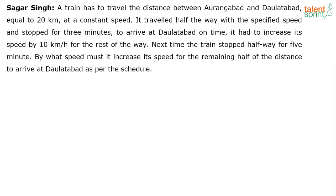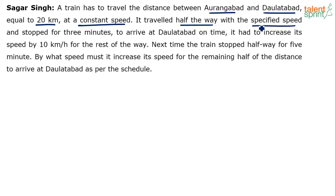So understand the question now very clearly. There is a train which has to travel a distance between two stations, Aurangabad and Dalatabad, which is equal to 20 km. The distance is equal to 20 km and it has to travel this at a constant speed. It travelled half the way, which means it travelled 10 km at the specified speed.